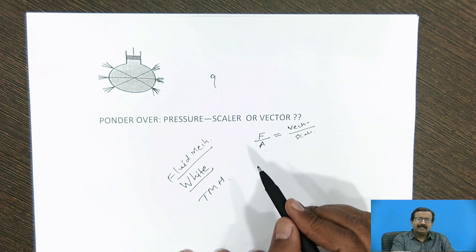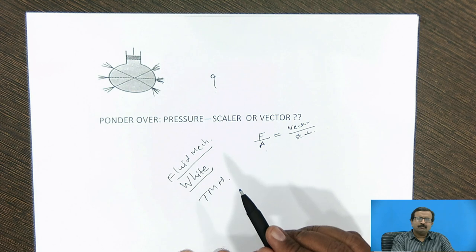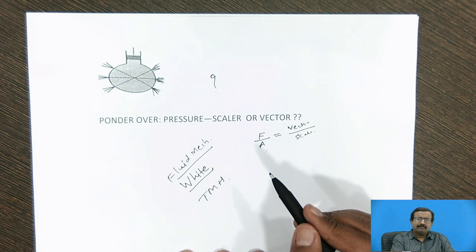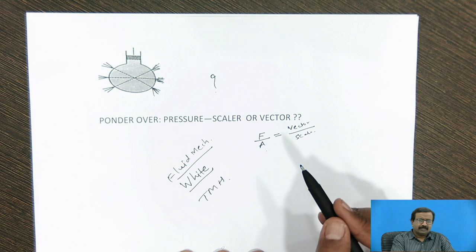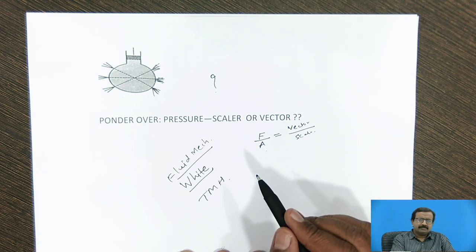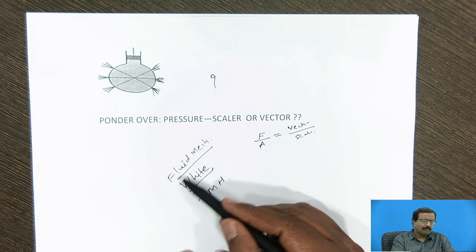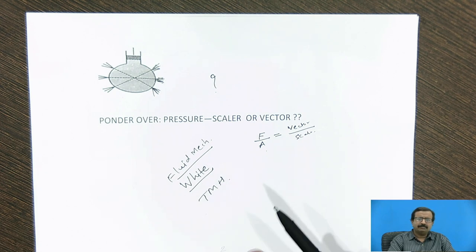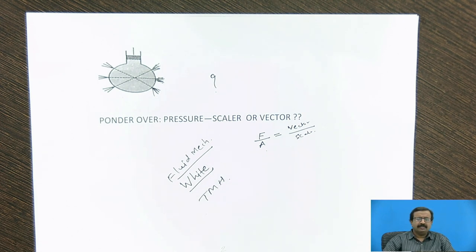And thrust is a scalar quantity, which is a force in the perpendicular direction. And because of that, we get pressure as a scalar quantity. So for any reference, I suggest you to go for Fluid Mechanics by White by TMS publication. And for today's session, we will stop over here. Thank you.